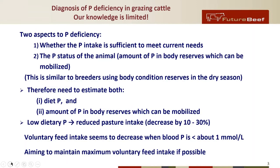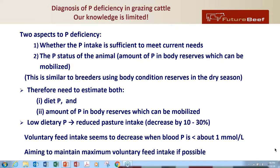There are two aspects to P deficiency. The first is whether the P intake is sufficient to meet the animal's current needs, and the current P status of the animal — as Rob described, they do have body reserves they can utilize. So this current status is an important consideration. We want to get a handle on the diet P they're ingesting via their feed, and also the amount of P in their body reserves which can be mobilized. Low dietary P reduces pasture intake, and we expect that reduction to be in the order of 10 to 30 percent.